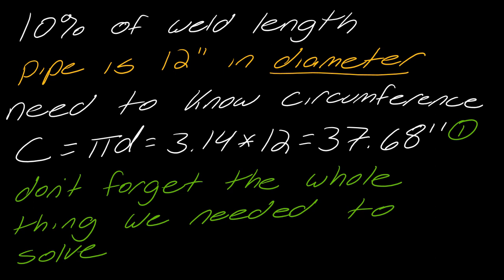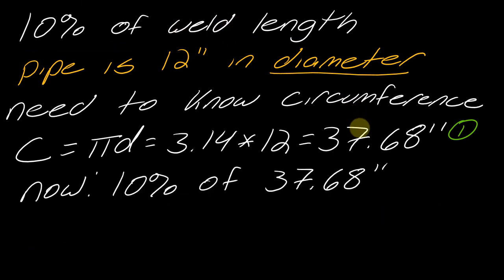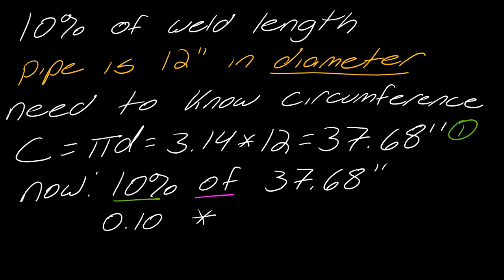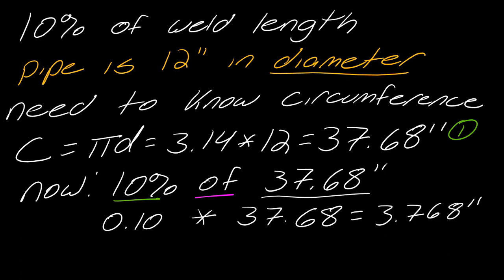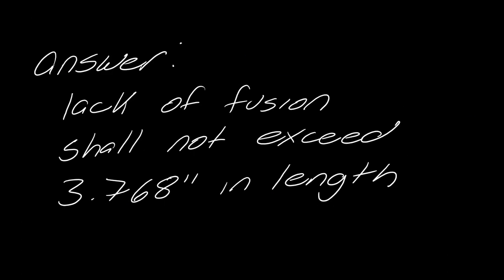Remember, we need to solve the whole problem — the whole point was 10% of the weld length. It's easy to calculate the circumference and think you're done. Reread the problem and make sure you've answered everything. So now, 10% of 37.68 inches translates to 0.10 × 37.68, which equals 3.768 inches. The answer: lack of fusion shall not exceed 3.768 inches in length.